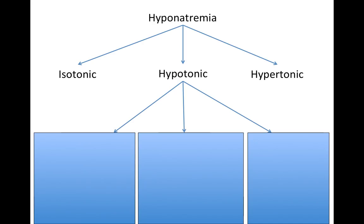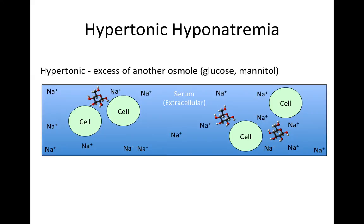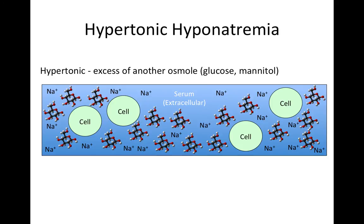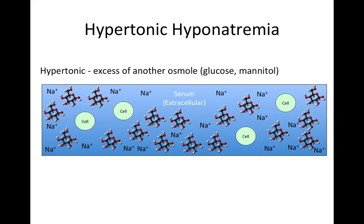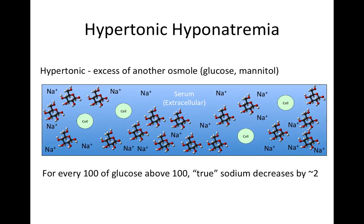The first step in workup of hyponatremia is to look at the tonicity of the serum. Most commonly hyponatremia is hypotonic, but there are rare causes of isotonic and hypertonic hyponatremia. In hypertonic hyponatremia, an osmotically active molecule like glucose or mannitol causes cells to shrink, releasing water into the serum, creating a dilutional hyponatremia. The rule of thumb is that for every 100 mg/dL of glucose above 100, the true sodium decreases by about 2 mEq/L.